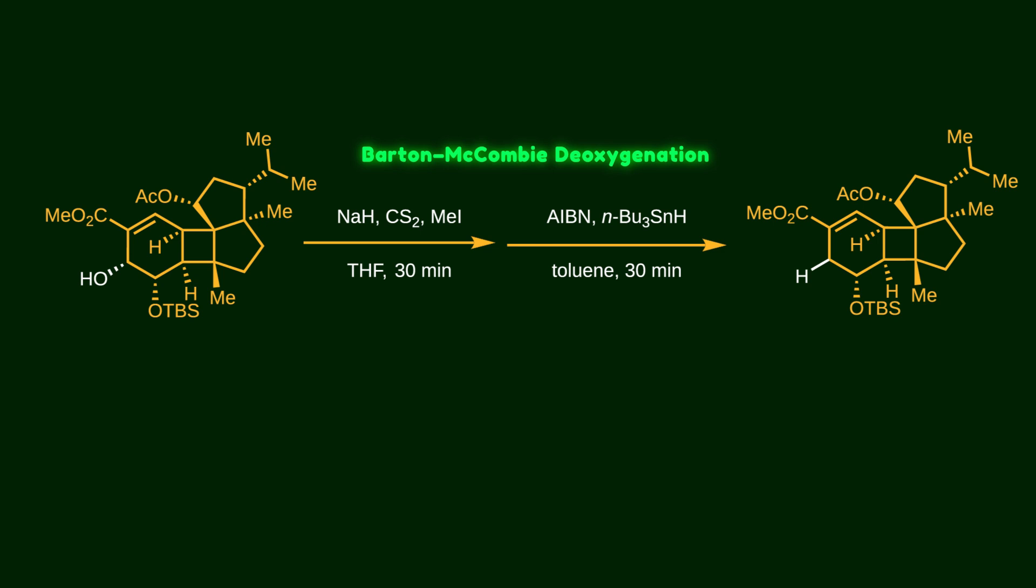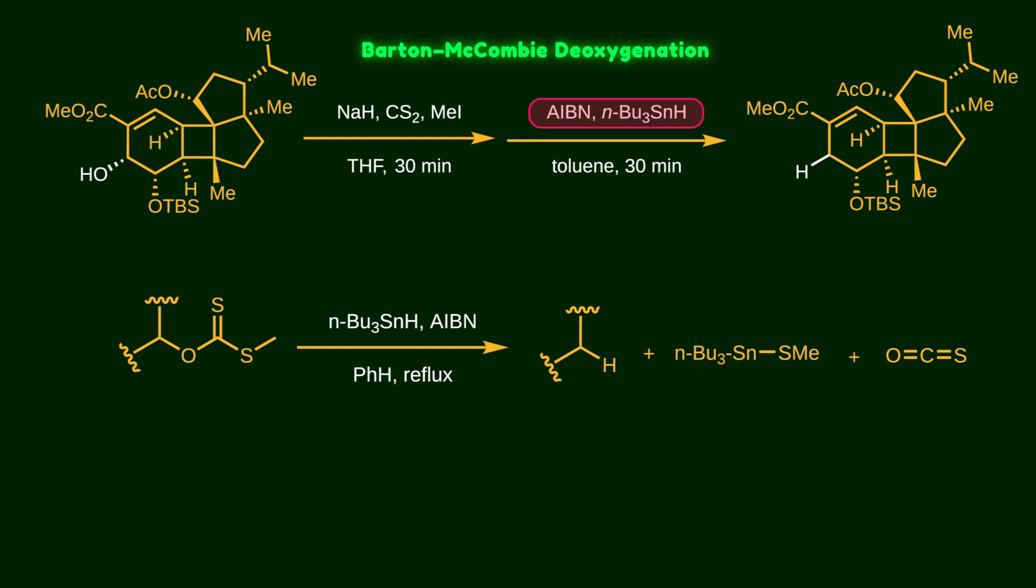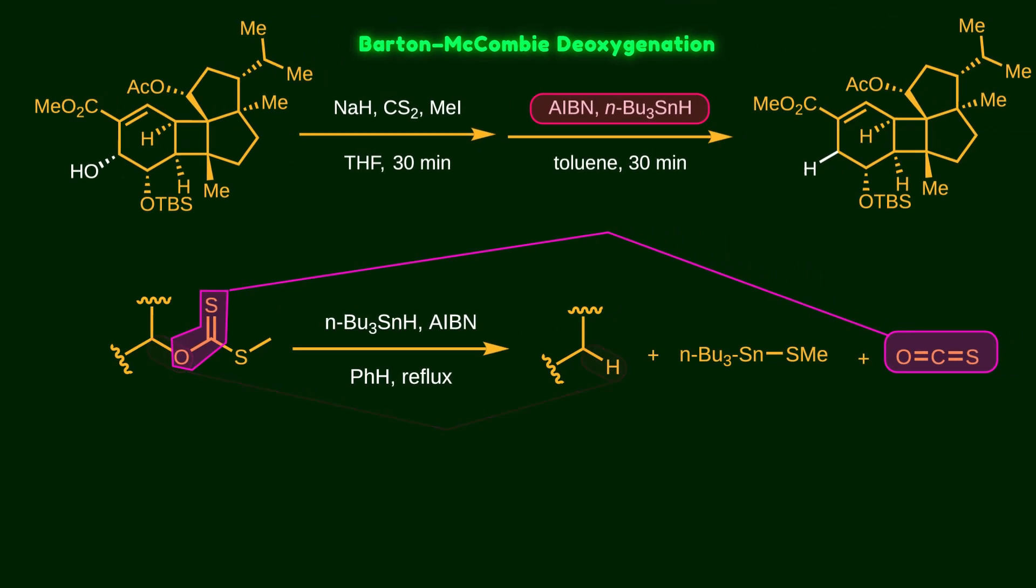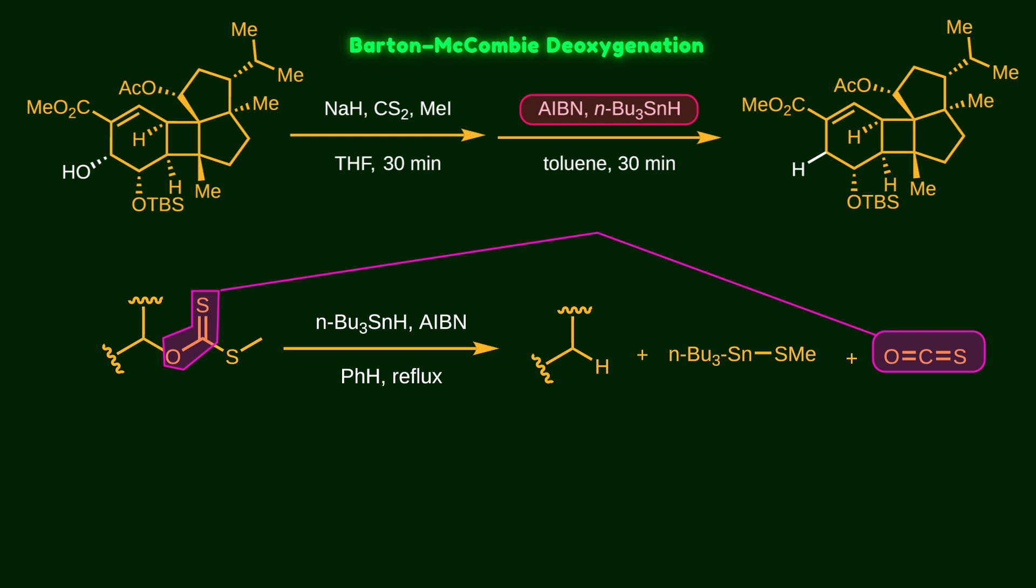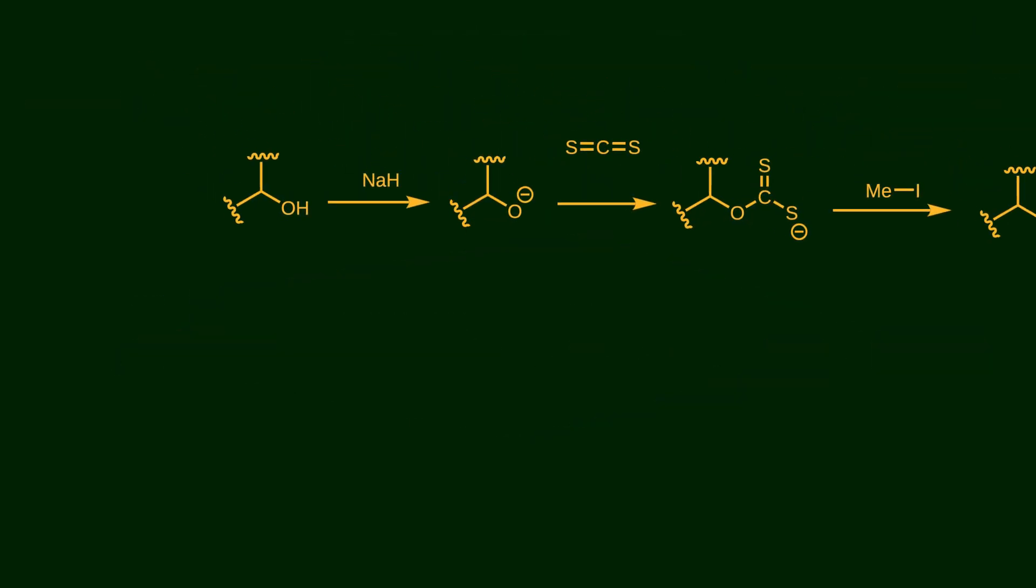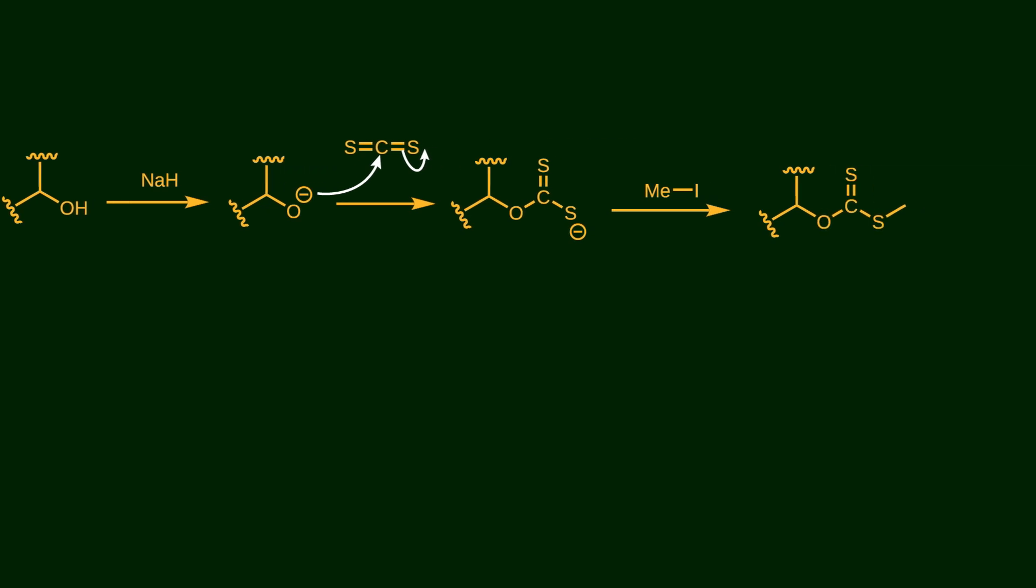Now we want to remove the hydroxy group using Barton-McCombie deoxygenation, which employs tributyltin hydride and AIBN. Let's look at the big picture of the reaction. First, the alcohol is converted into a thiocarbonyl derivative. After that, the carbon-oxygen bond is cleaved and the desired product is released without the hydroxy group. This part of the molecule leaves as carbonyl sulfide, while the remaining methyl sulfur attaches to the tin, forming a strong Sn-S bond. To create the thiocarbonyl, sodium hydride as a base deprotonates the alcohol, and then it attacks the carbon disulfide. Next, the negatively charged sulfur atom attacks methyl iodide via an SN2 reaction.